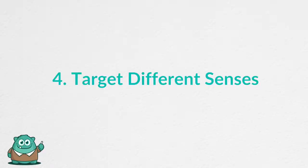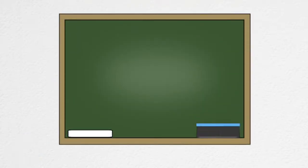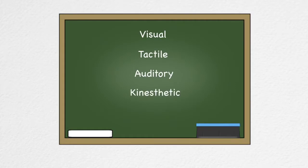Number four, target different senses within lessons. A lesson should resonate with students if it targets visual, tactile, auditory, and kinesthetic senses instead of only one. Not only will these tactics help more students grasp the core concept of lessons, but make class more engaging.